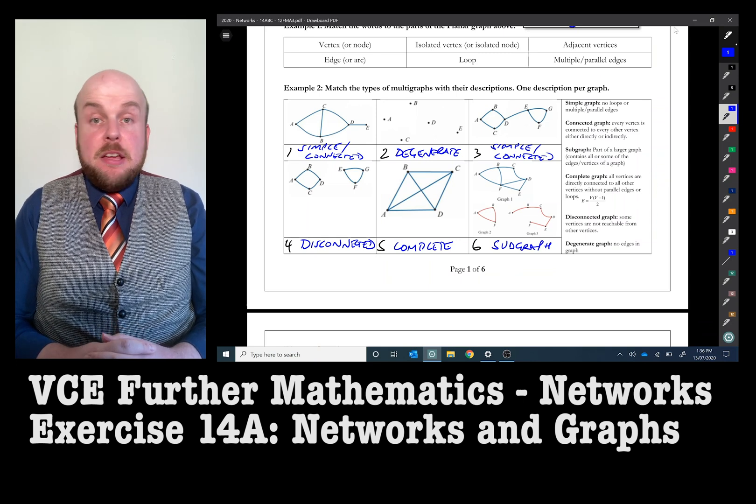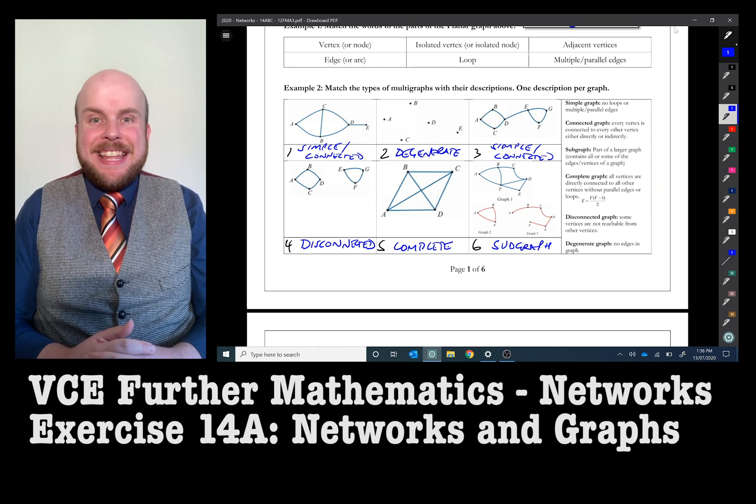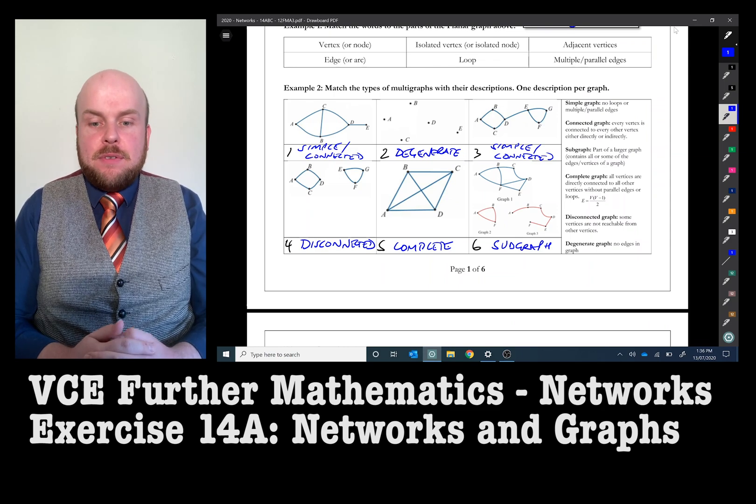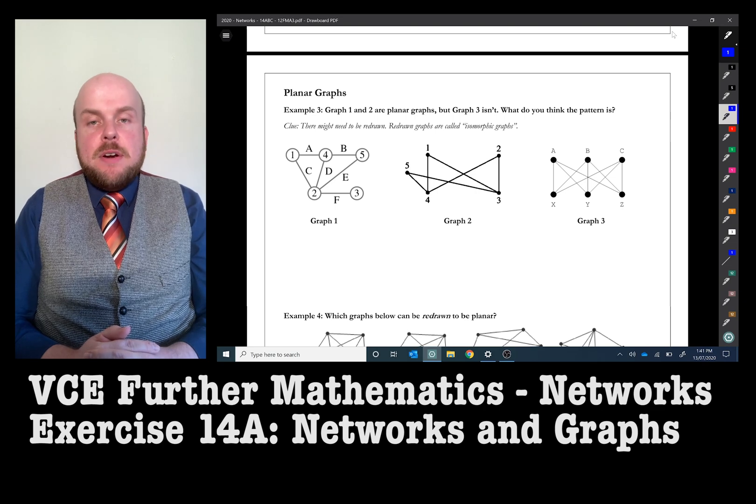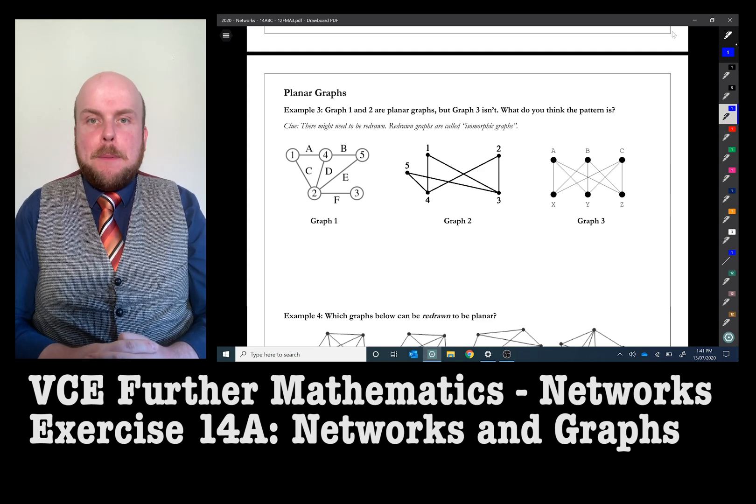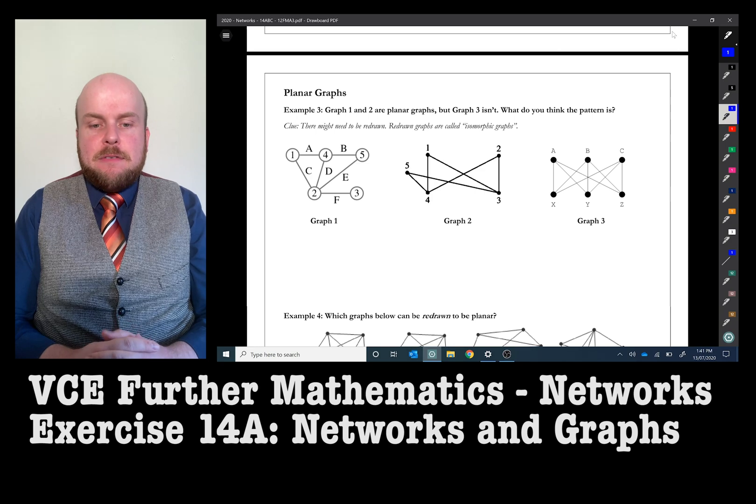Number three is also an example of a connected graph, with the exception that it has a bridge edge, that's the edge between D and E, that connects two sections of graph. Planar graphs. At the very beginning in the first example, I suggested that that network multigraph is also planar. So what is it that makes a graph planar?